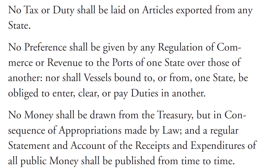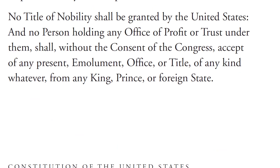No money shall be drawn from the Treasury but in consequence of appropriations made by law, and a regular statement and account of the receipts and expenditures of all public money shall be published from time to time. No title of nobility shall be granted by the United States, and no person holding any office of profit or trust under them shall, without the consent of the Congress, accept of any present, emolument, office, or title of any kind, whatever, from any king, prince, or foreign state.